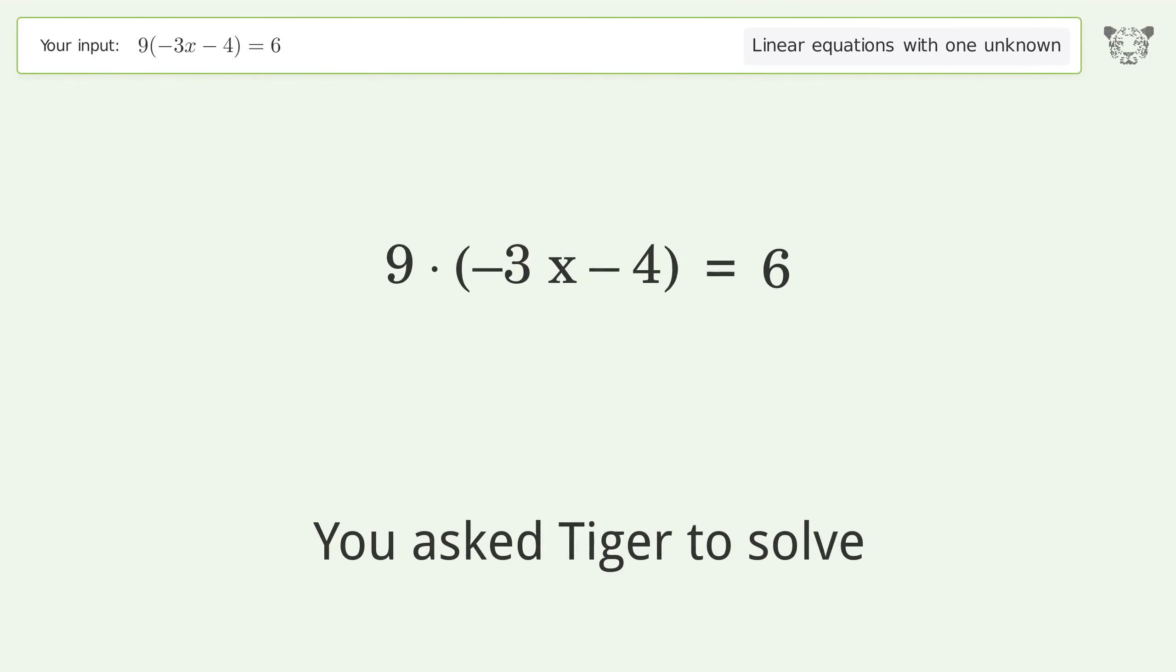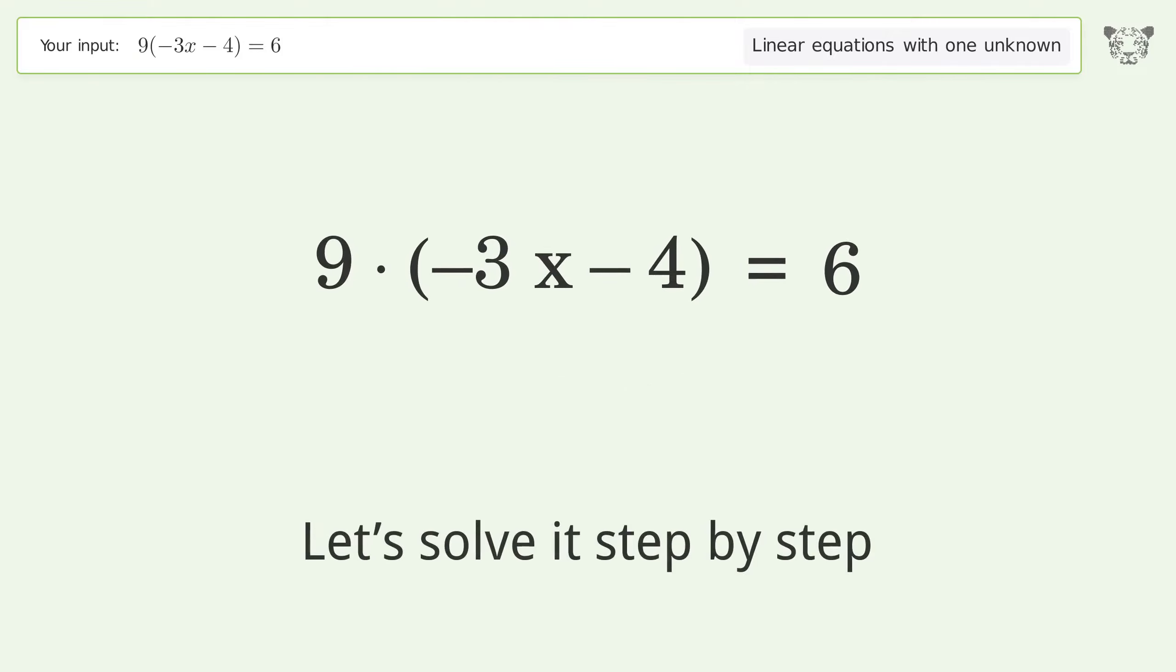You asked Tiger to solve this. It deals with linear equations with one unknown. The final result is x equals negative 14 over 9. Let's solve it step by step.